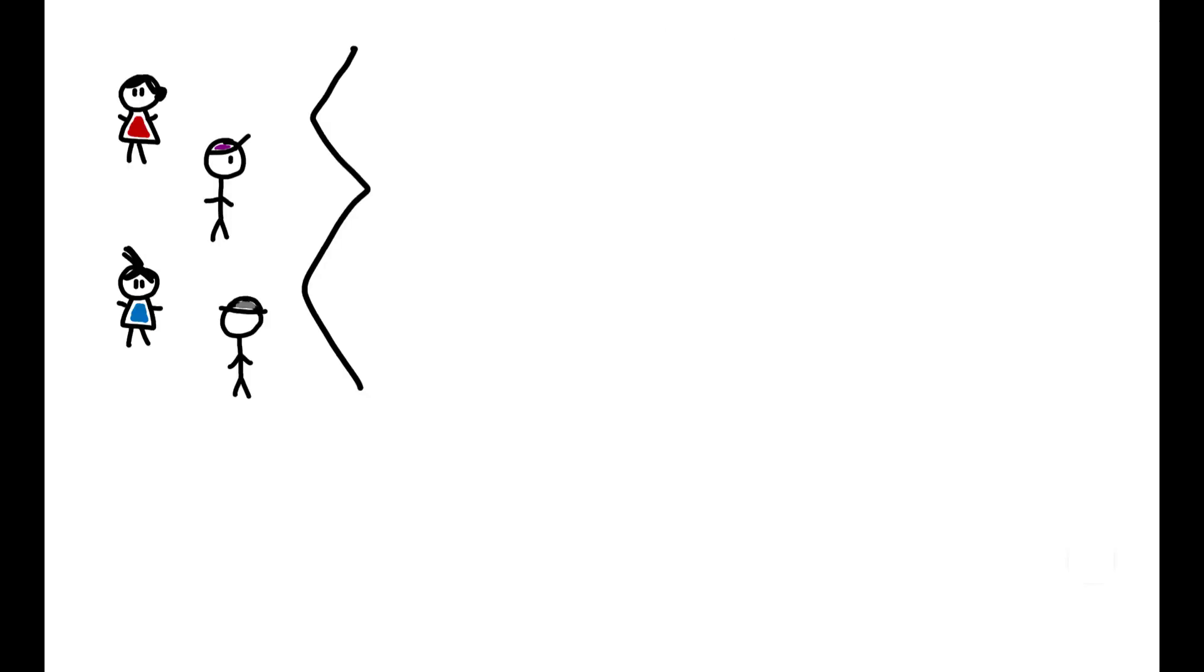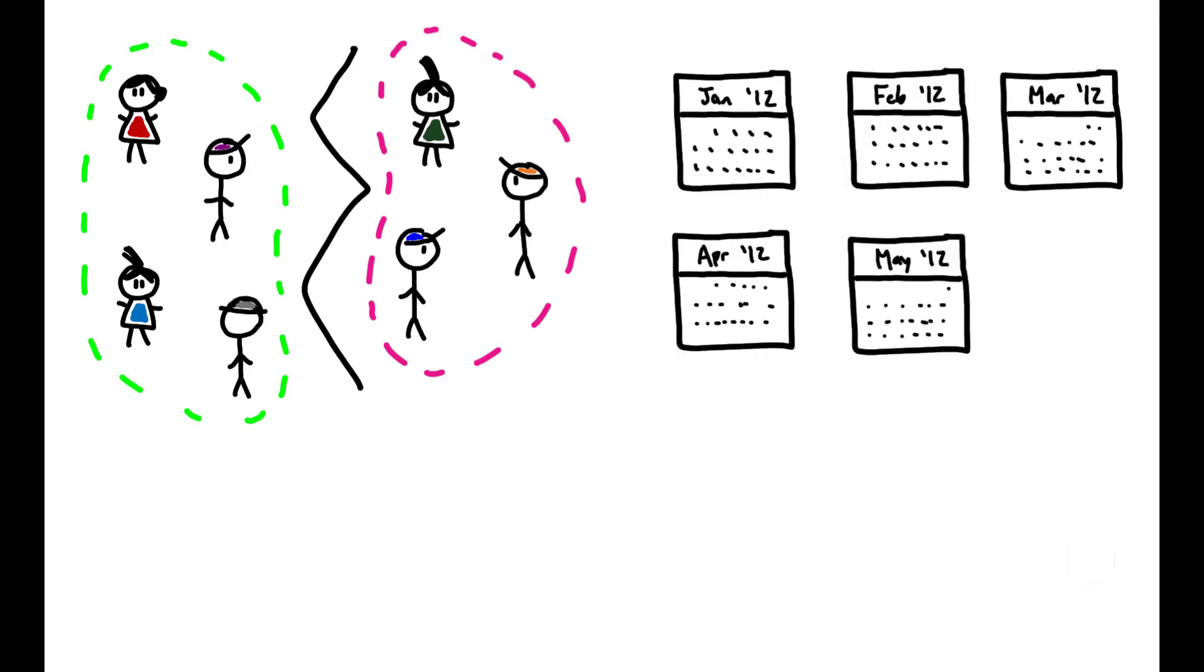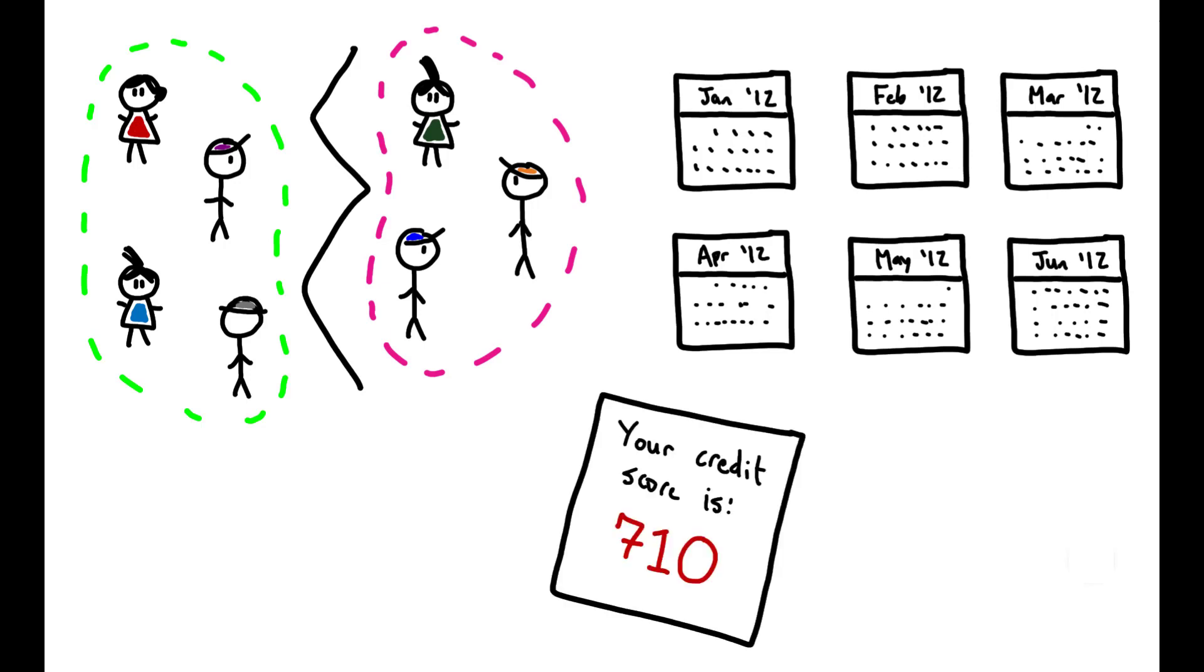They group borrowers together if they live in the same commuting zone, took out a loan in the same six-month transaction window, and are similar on a number of dimensions including their credit score. Thus, each group consists of similar borrowers taking out the same loan at the same time and in the same geographic market.